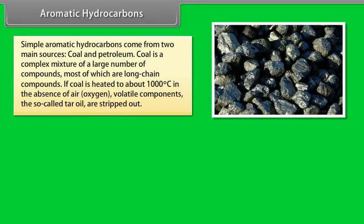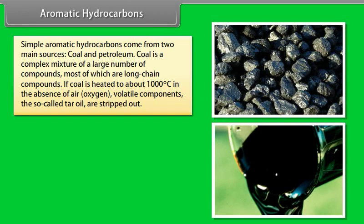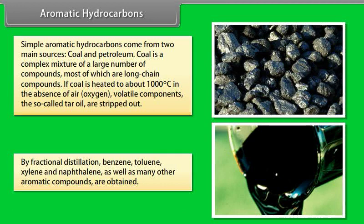Simple aromatic hydrocarbons come from two main sources: coal and petroleum. Coal is a complex mixture of a large number of compounds, most of which are long-chain compounds. If coal is heated to about 1000 degrees Celsius in the absence of air or oxygen, volatile components, the so-called tar oil, are stripped out. By fractional distillation, benzene, toluene, xylene and naphthalene as well as many other aromatic compounds are obtained.